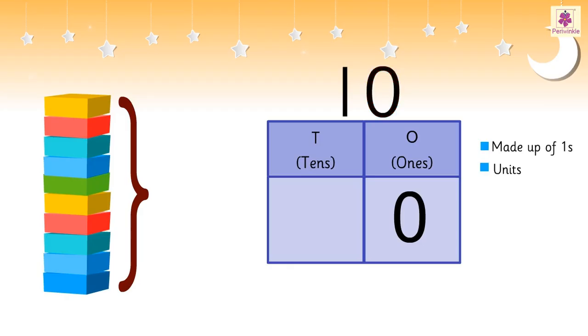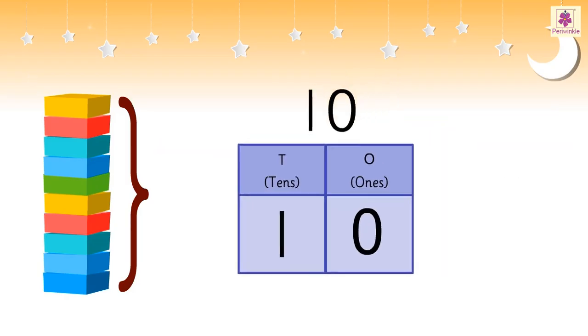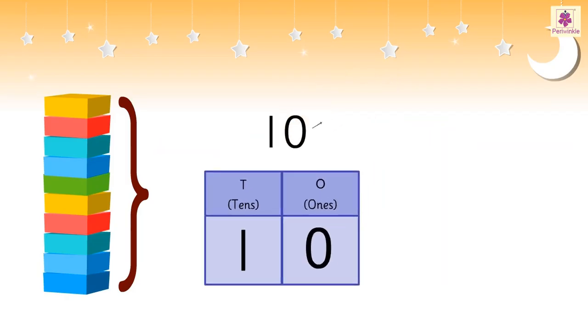While the number on the left is written in the tens column, as it is made up of tens. We call this as ten ones, or ten units, or one ten and zero ones.